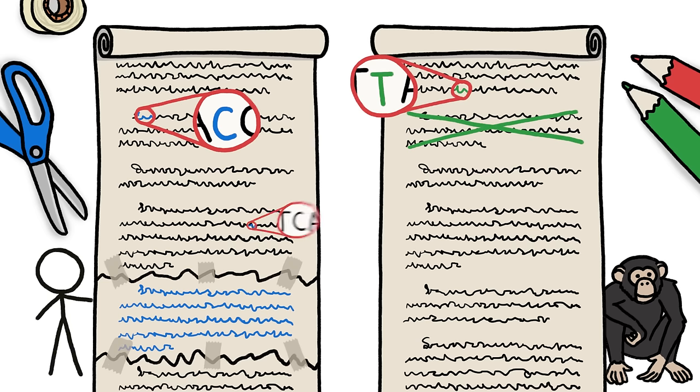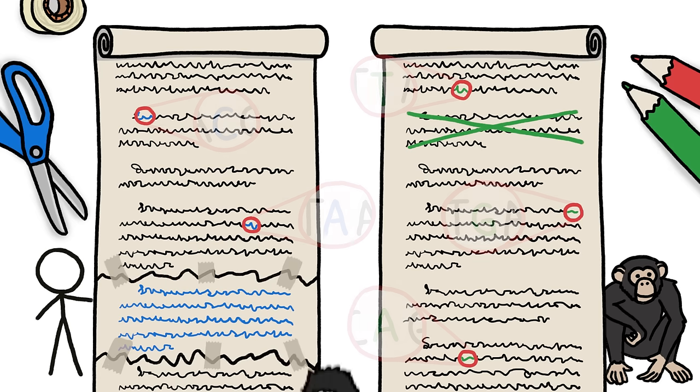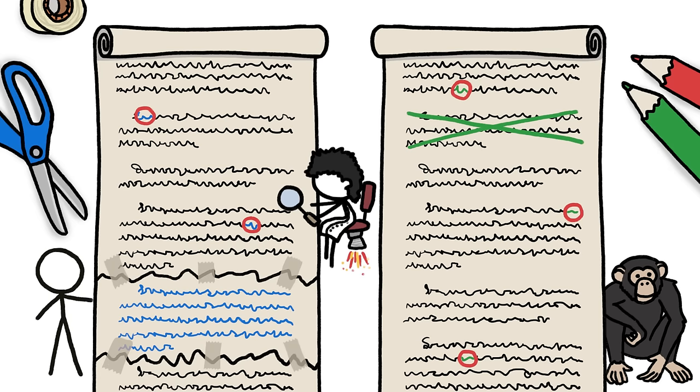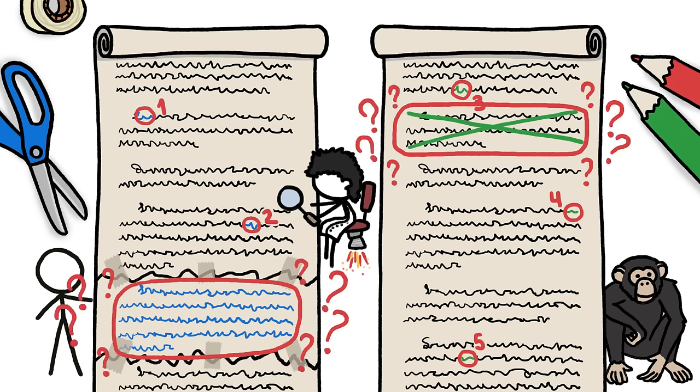while throughout the scrolls, tiny mutations swapped one letter for another. When researchers sat down to compare the chimp and human genomes, those single letter differences were easy to tally. But the big mismatch sections weren't.